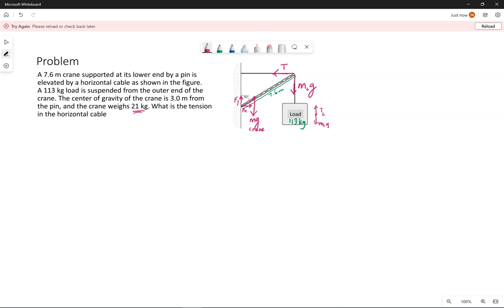So we're looking for the tension in the horizontal cable. We know the mass of the load, we know the mass of the crane, we know those distances. So I am going to write out the net torque equation first. As a reminder, torque is RF perpendicular or RF sine phi. So to be able to talk about torque, we need to choose a rotation axis.